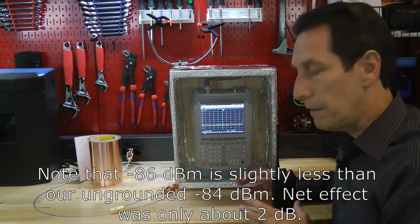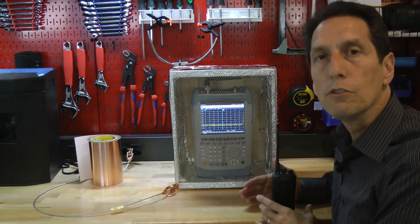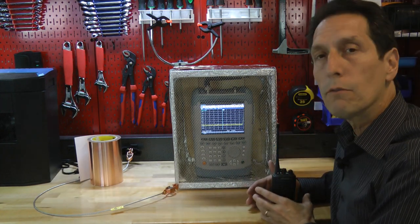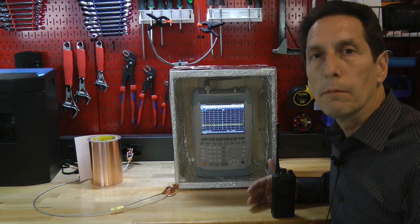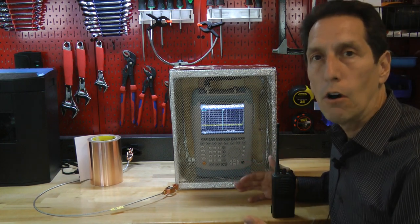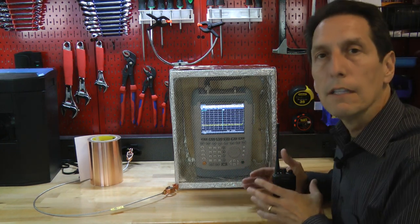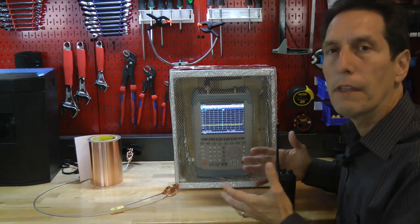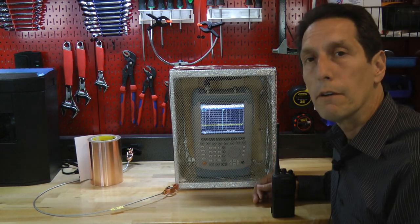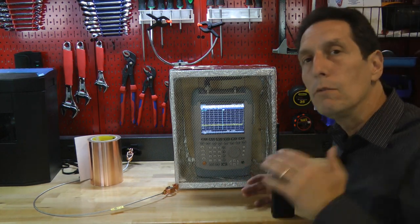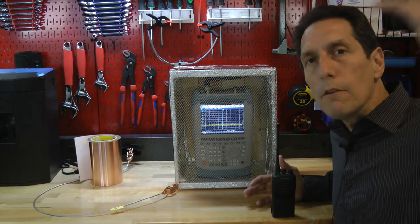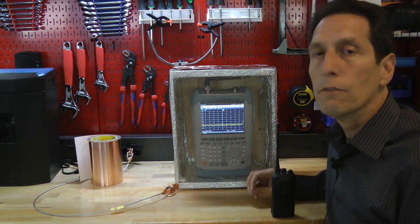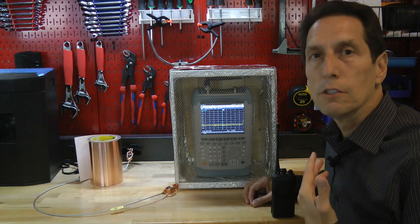And the reason it has any real effect is because we're very close to the transmitting source. If I took the radio across the room and I repeated the experiment, you wouldn't really see any change at all. We're approaching to being in the near field of this radio where things start to have an effect whether they're grounded or not. In the case of an EMP, which occurs many miles away, maybe hundreds of miles away, the effect of grounding the Faraday cage would be essentially zero.